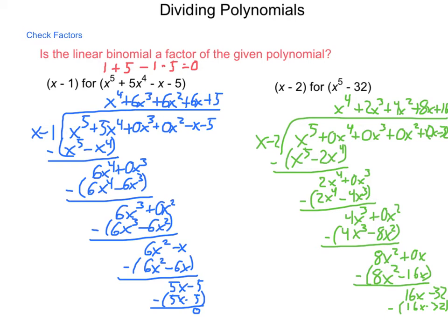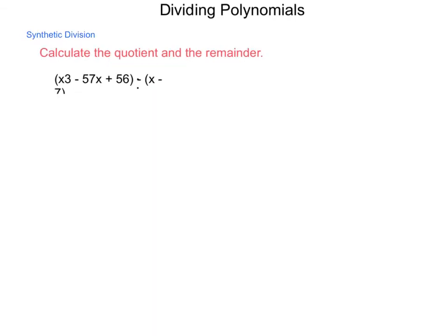Now, this process of long division is just what it says. It is long. There is a way to shorten the work a bit and compact our answers a little bit more. To show this, we're going to begin by dividing this as we have the last two problems. We're going to take x³ + 0x² - 57x + 56 and we're going to divide it by x - 7.